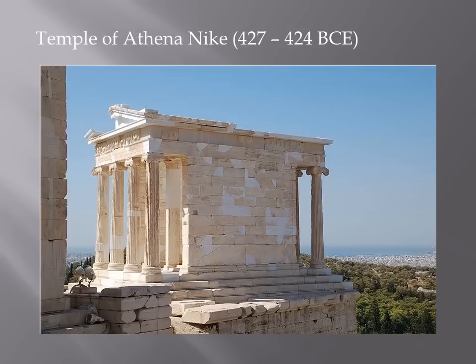You would not see the Corinthian Order in this Temple. The reason is that the Corinthian Order evolved in Corinth, which was another famous city-state, but began approximately 25 years after this particular Temple was built. So the ancient Greeks had the opportunity to use the Doric and Ionic orders on this Temple, but they did not have the opportunity to use the Corinthian Order.